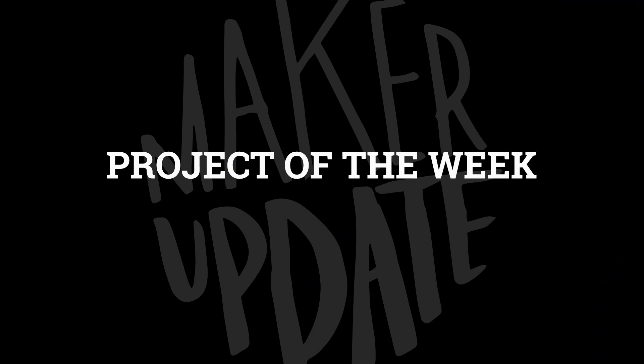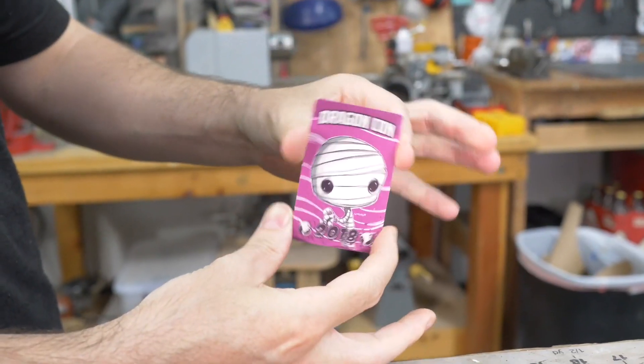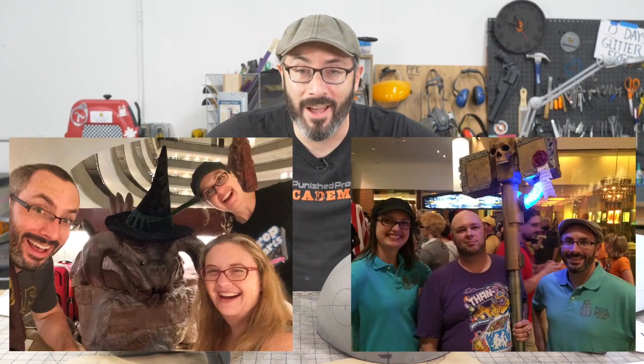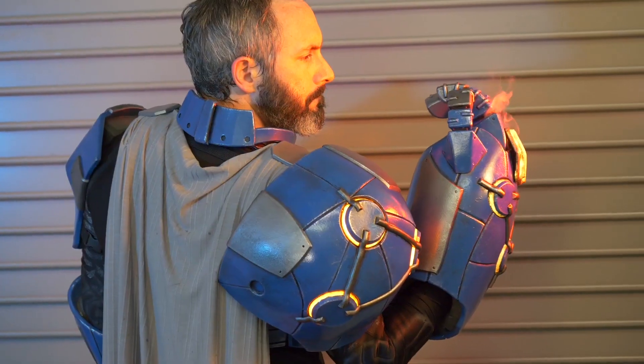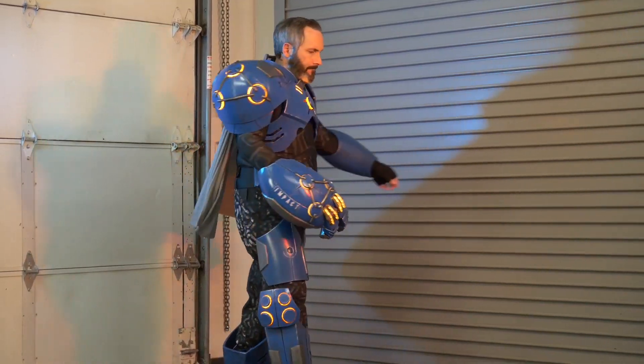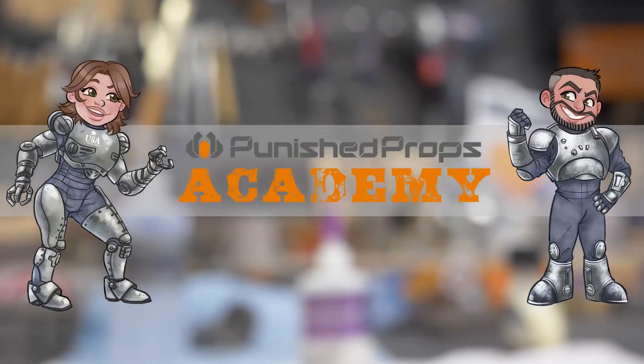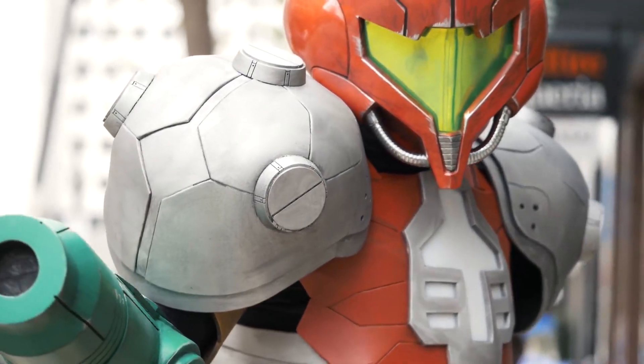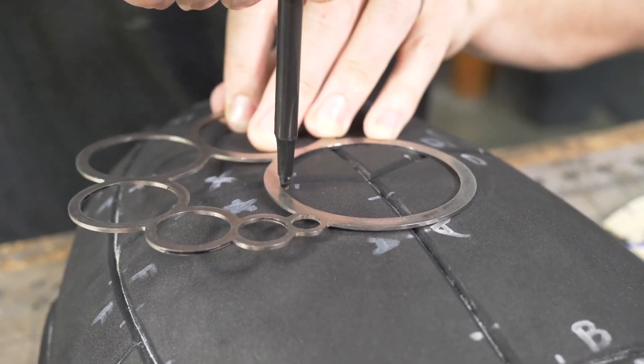Dragon Con, the cosplay-heavy Atlanta convention, was a couple weekends ago and Bill Duran debuted this Bright Impact Armor costume complete with lights and smoke. Bill and Brittany Duran of Punished Props are known for their elaborate and visually stunning costumes, but it's been a while since they've had the time to dig into a large-scale full body build like this one.